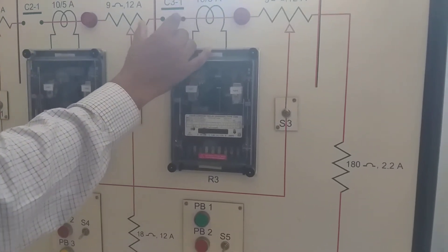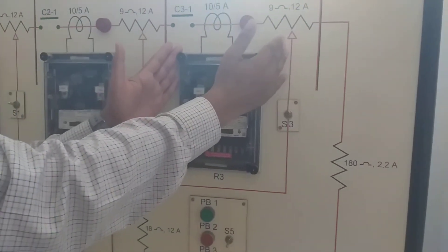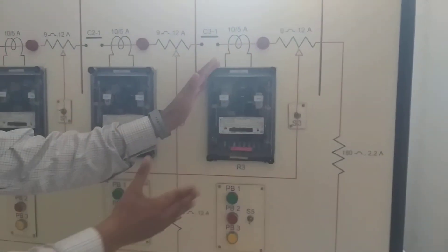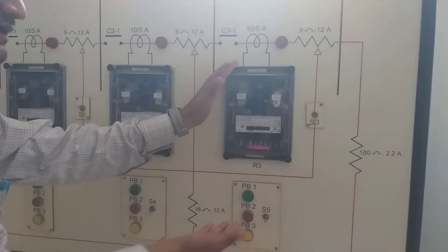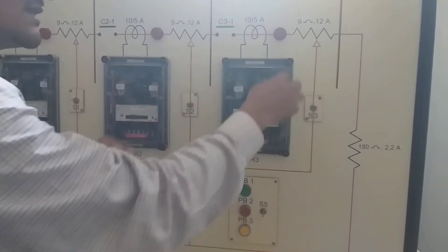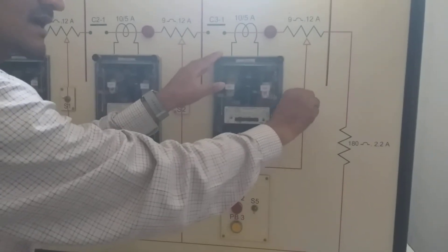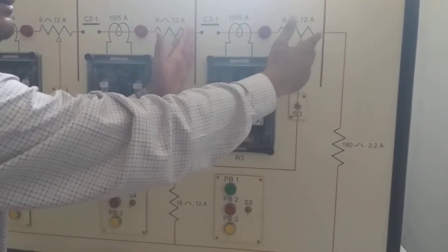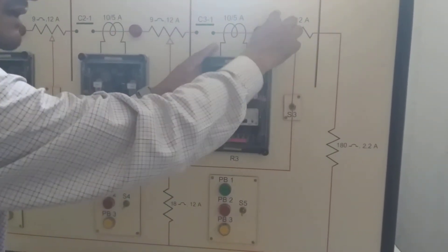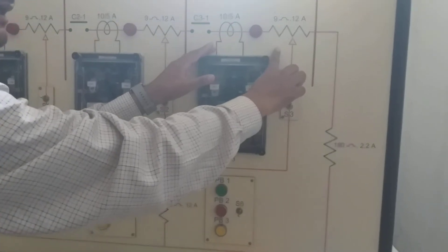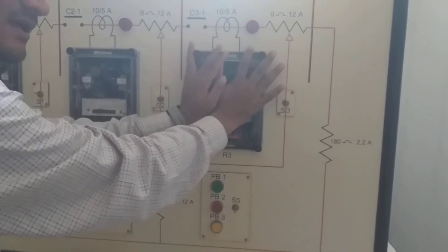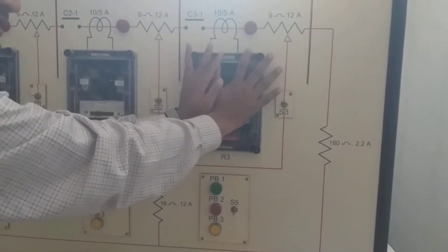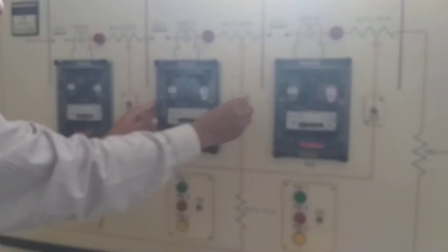The circuit breaker will open, and the faulted section will be isolated from the healthy part of the system. The fault is created in that section only. So whichever area the fault is created in, only that relay will energize. This is the S2 switch.